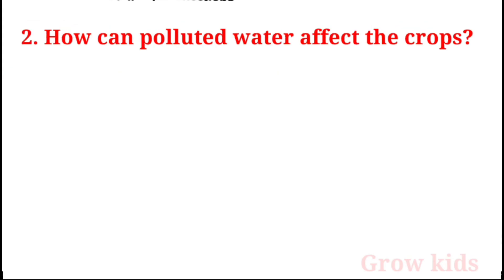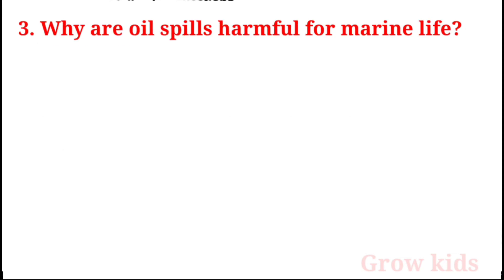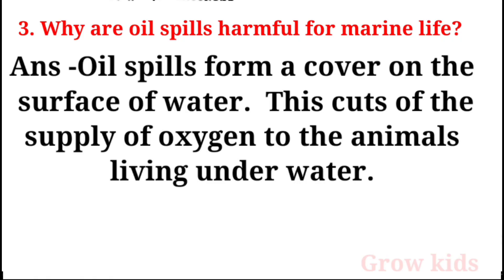Question 2: How can polluted water affect crops? Answer: When polluted water is used for irrigation, the fertility of soil gets reduced and crops can get damaged. Question 3: Why are oil spills harmful for marine life?